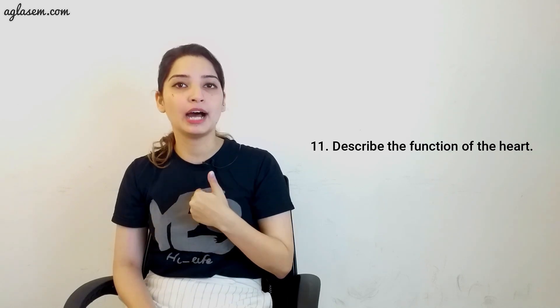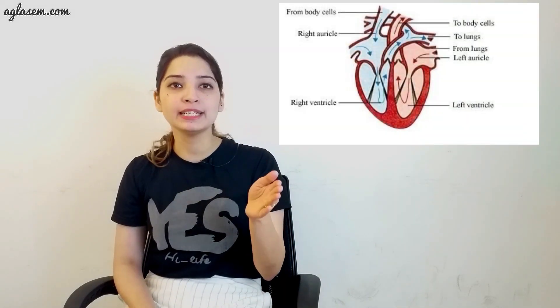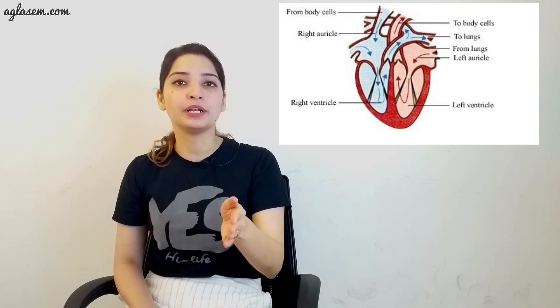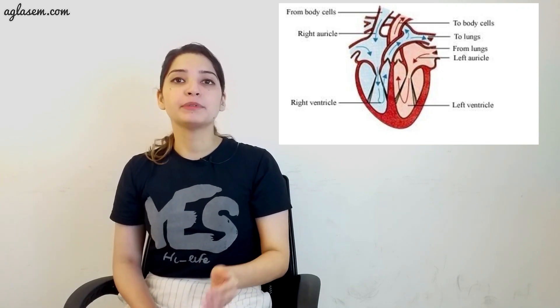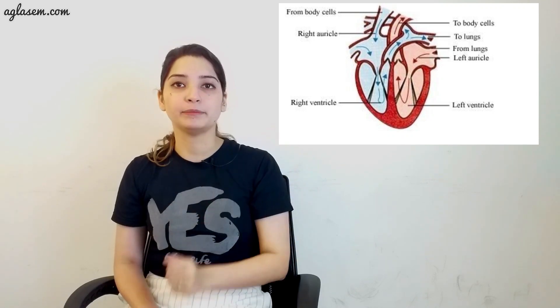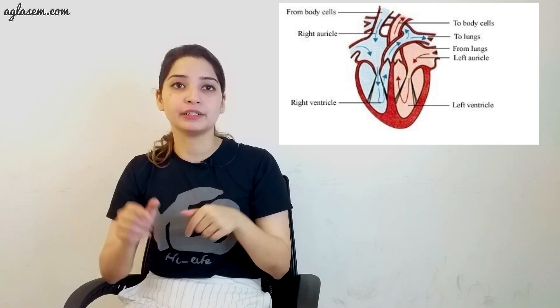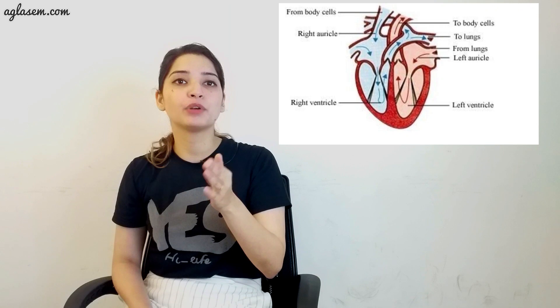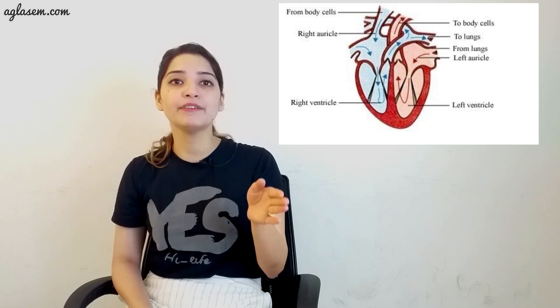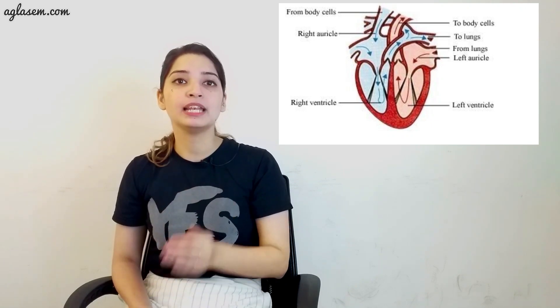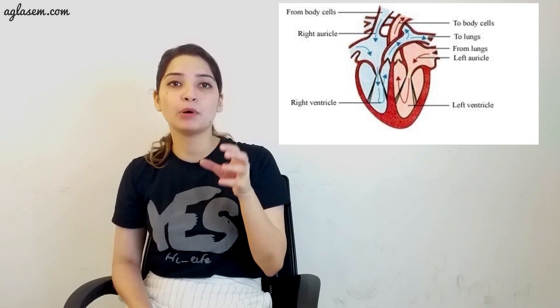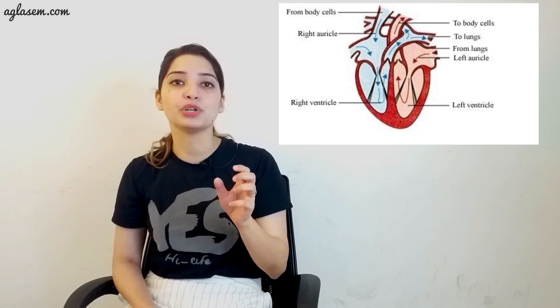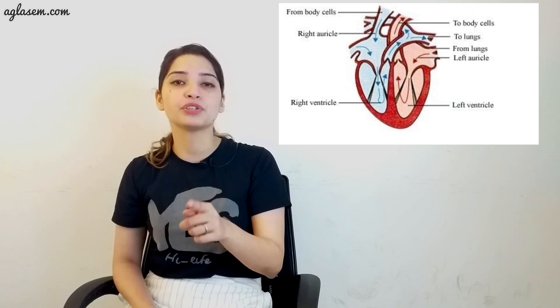Moving to question 11, describe the function of the heart. The human heart is divided into four chambers. The upper two chambers are called the right and the left atrium. The lower two chambers are called the right and the left ventricles. The right atrium receives carbon dioxide-rich blood from the body. The blood from the right atrium enters the right ventricle, which contracts and pumps the blood to the lungs. The oxygen-rich blood from the lungs returns to the left atrium. From the left atrium, blood enters the left ventricle. The left ventricle contracts and pumps the blood to all the parts of the body.